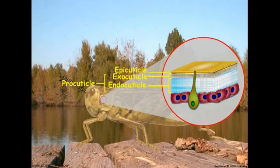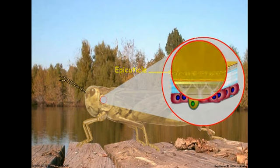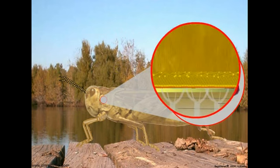Above the exocuticle is the epicuticle. The epicuticle is thin and consists of four layers. Cuticulin is the innermost epicutical layer and is composed of sclerotized proteins and lipids. Some layers of the cuticle may be absent in regions of the body of some insect species, but the cuticulin layer is always present.